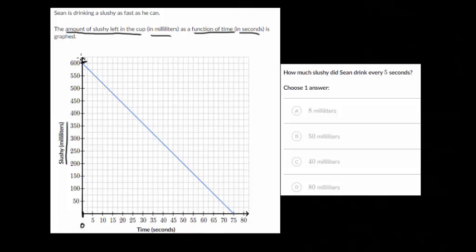And then as time goes on, it decreases linearly because it's going down in a line. And it looks like by the time you reach 75 seconds that there's zero milliliters of slushy left.